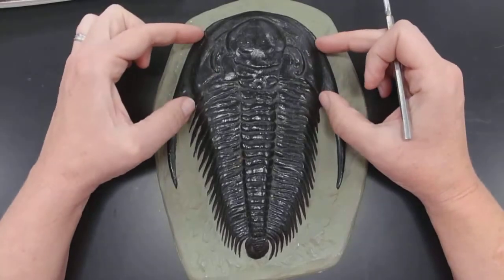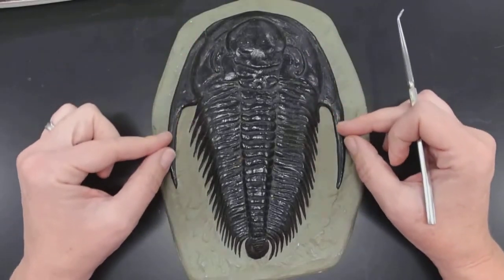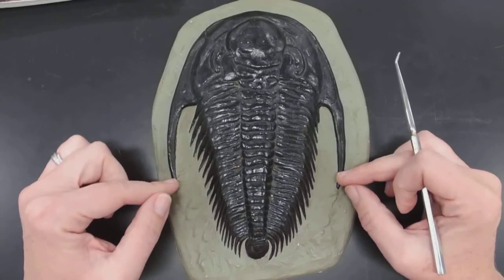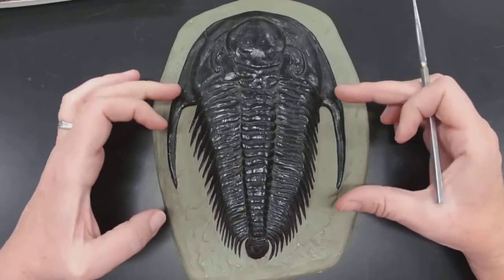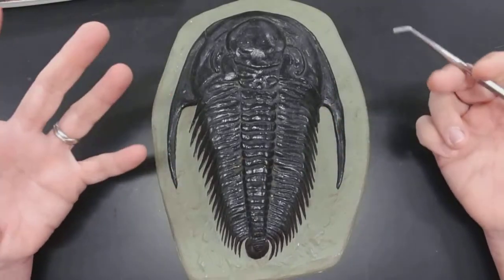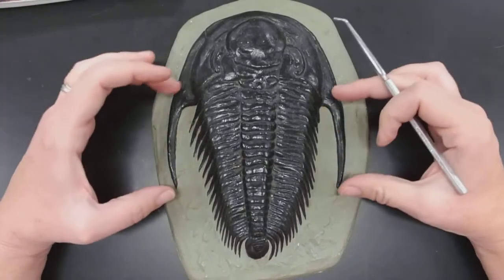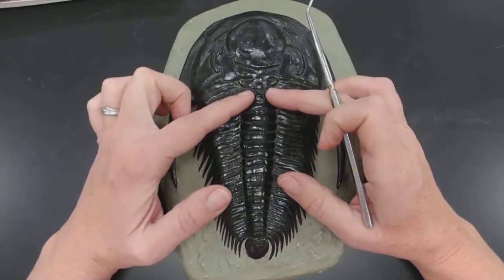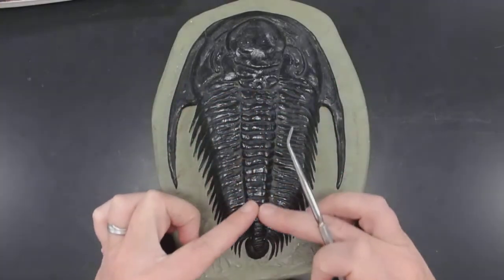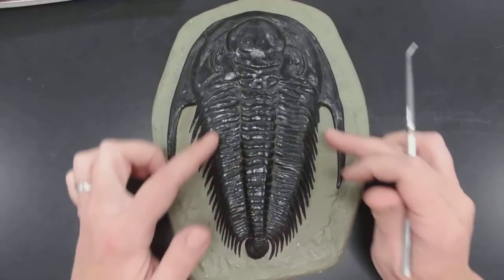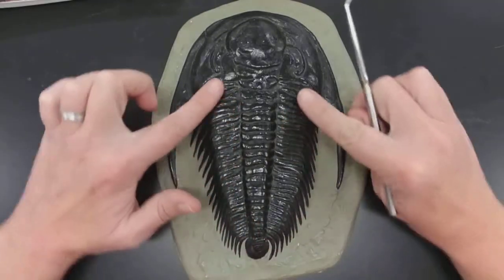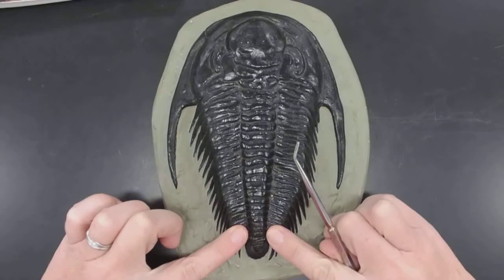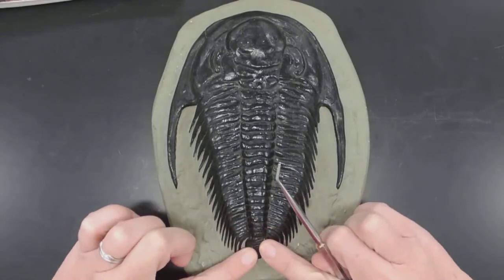Another feature of the head is that it might come down into what's called a genal spine. The length of the spine and the presence of the spine varies greatly amongst different species. Then there is this central lobe down the middle, and the pleural lobes are all this part on either side. And again, that's the tail.